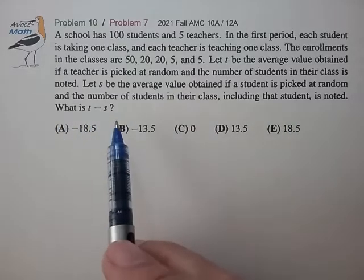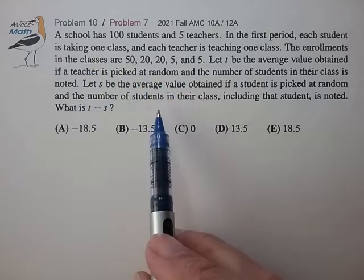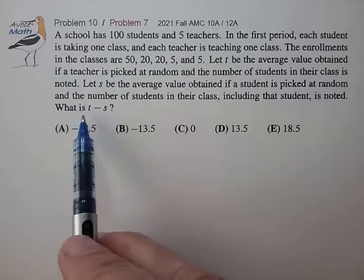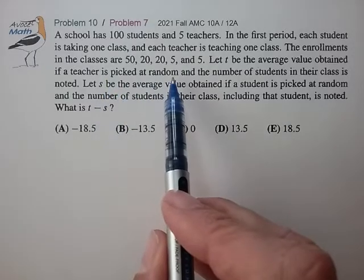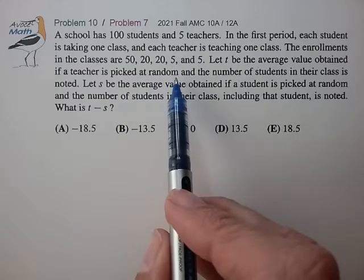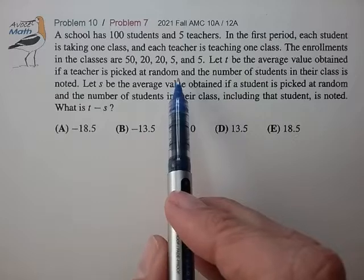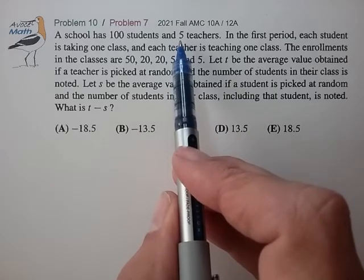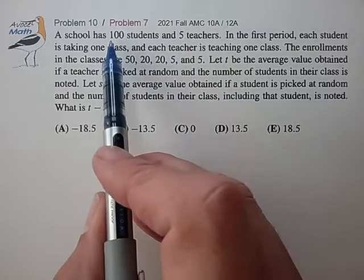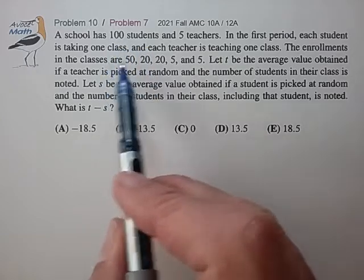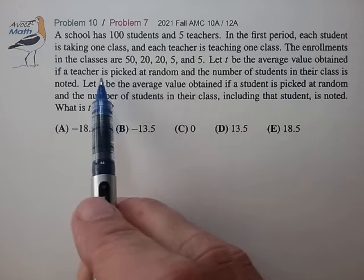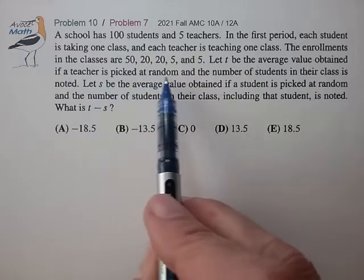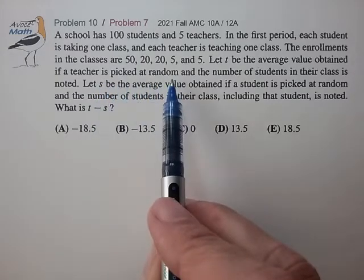All right, so it looks like we're going to take two different types of averages and calculate the difference. Now, this picking at random is a bit confusing, so instead, why don't we sample each of the five teachers once and each of the 100 students once to form the two different types of averages, and I think that should work out the same as some random process that they're suggesting.